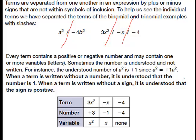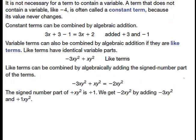Every term contains a positive or negative number and can contain one or more variables. Sometimes the number is understood and not written. For instance, A squared is understood to be plus 1A squared. So negative X is really negative 1X — we don't need the 1 there to know it's there. Plain numbers like negative 4 are also terms. A term that does not contain a variable, like negative 4, is a constant.